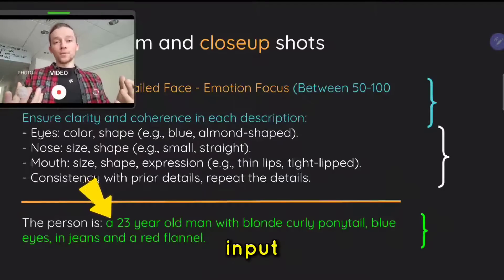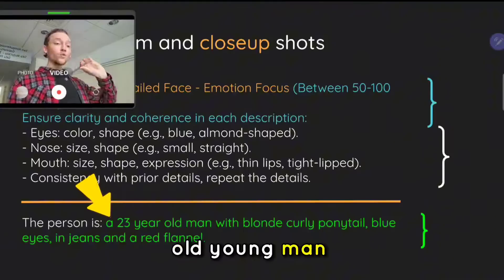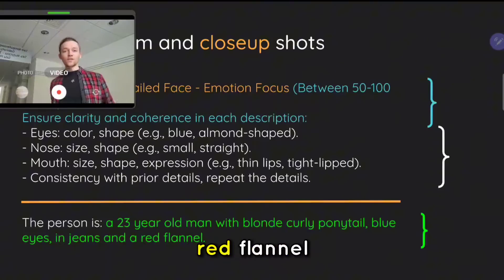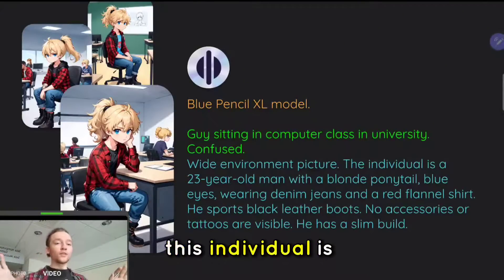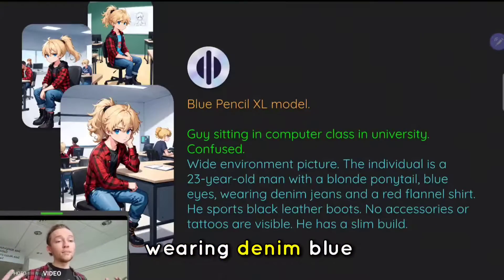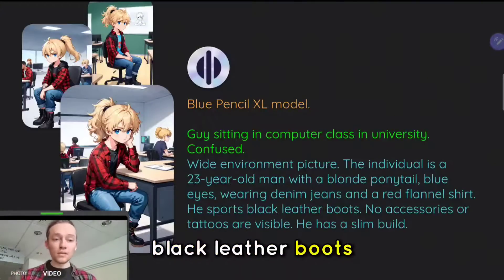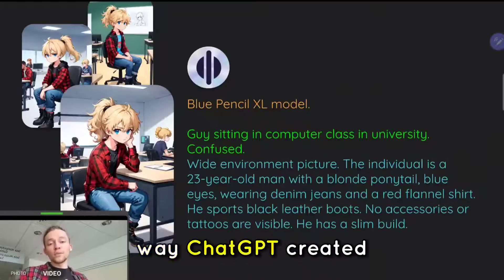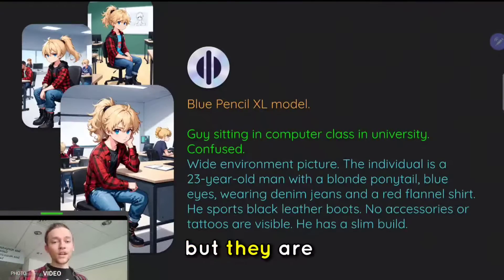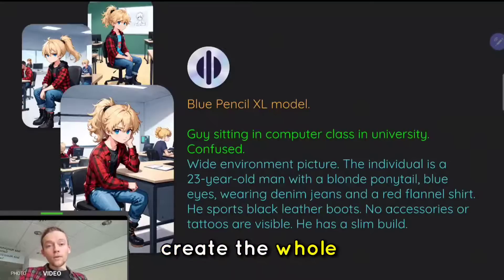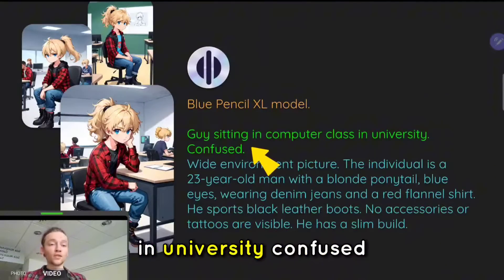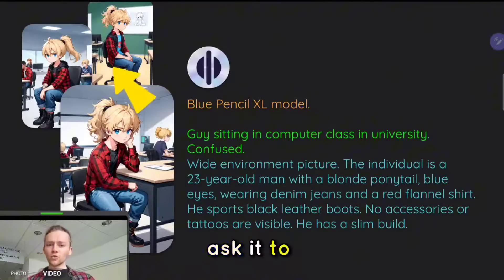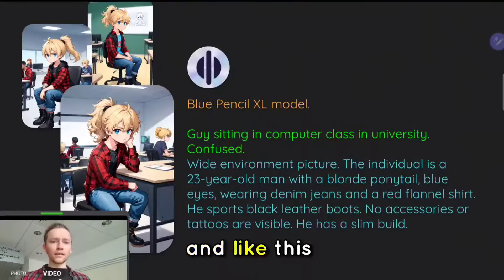The last part of this prompt is your input — your description of the character. For example: 'The person is a 23-year-old young man with a blonde ponytail, blue jeans, and a red flannel.' Easy enough. We take the output from ChatGPT and input it into the image generator: 'Wide environment picture. This individual is a 23-year-old man with a blonde ponytail, blue eyes, wearing denim blue jeans and a red flannel shirt. He sports black leather boots. No accessories or tattoos are visible. He has a slim build.' ChatGPT created the rest of the details that fill in the gaps, which are very necessary for the image generator to understand what the person looks like. The green part is what we actually add — the new action: 'Guy sitting in a computer class in university. Confused.' Simple emotion. You ask it to create four pictures and choose the best one. And like this, you can have a whole new story.